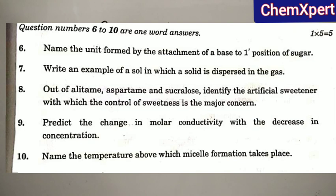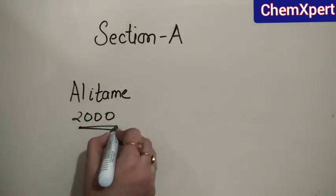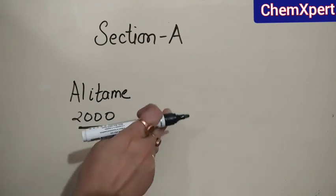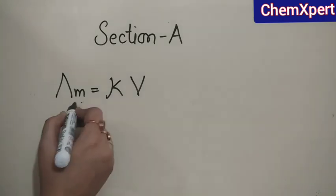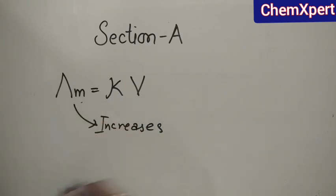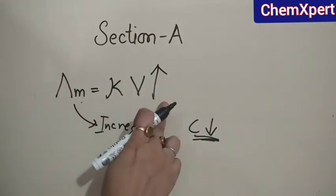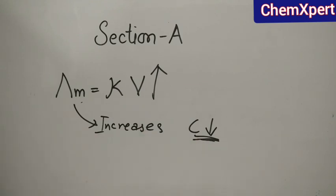Question 8: out of alitame, aspartame, and sucralose, identify the artificial sweetener with which control of sweetness is a major concern. The answer is alitame, as it is 2000 times sweeter than sucrose, making it very difficult to control its sweetness. Question 9: predict the change in molar conductivity with decrease in concentration — molar conductivity increases with decrease in concentration because dilution increases, meaning volume increases, so overall molar conductivity increases.